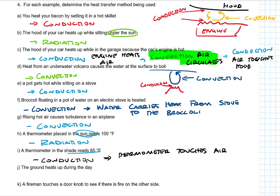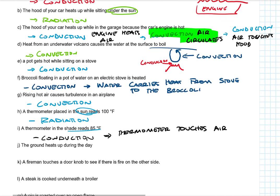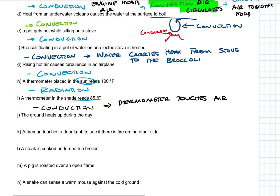Thermometer in the shade reads 85 degrees. This is conduction. Thermometer touches the air. The air is 85 degrees. And that makes the thermometer read 85 degrees. The ground heats up during the day. Well, the sun is what heats that up, so we've got radiation.